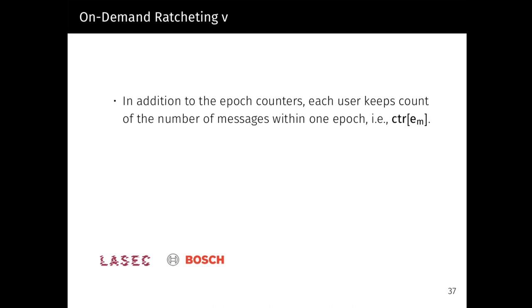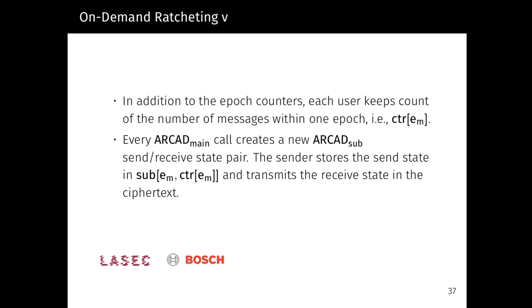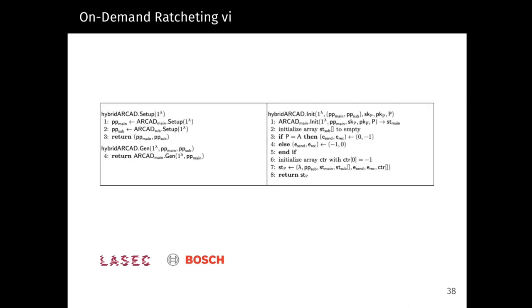In addition to the epoch counters, each user keeps count of the number of messages within one epoch. So from a high level perspective, each RCAT_main call creates a new RCAT_sub send and receive state. The sender stores the send state in an array and transmits the receive state in the ciphertext. So how does our protocol actually look like? The setup and initialization routines are very similar to the security-aware construction from before. In the initialization function, we create an RCAT_main state for each user and initialize their epoch counters and arrays.